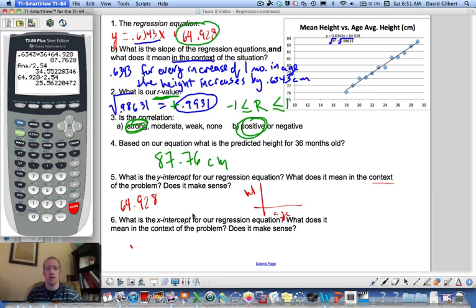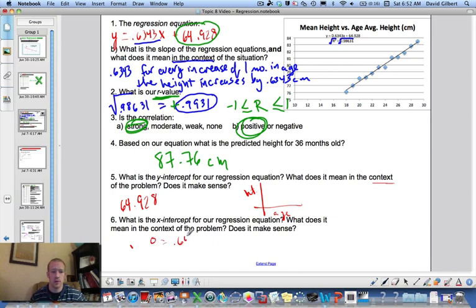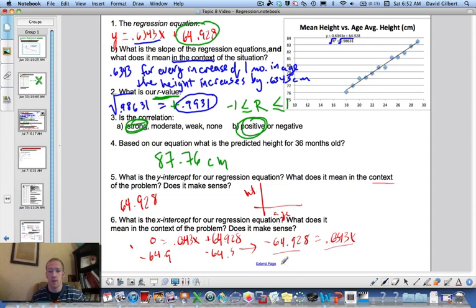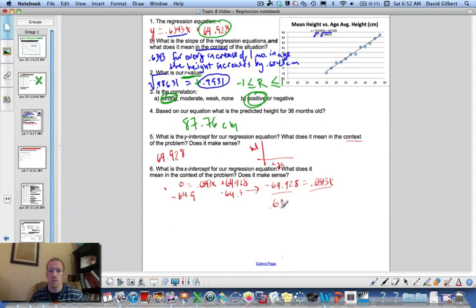What is the x-intercept? So what you would do here is you would just take your equation. The x-intercept is when your height is 0. So that's when the y-value is 0. So you just plug in 0 for y. And that equals this. So then I subtract this from each side. I'm being a little lazy here because I'm running out of room and time. I don't want to waste yours or mine. So we have negative 64.928 equals 0.6343x. So divide both sides by that. And what do we get? And that equals negative 102.